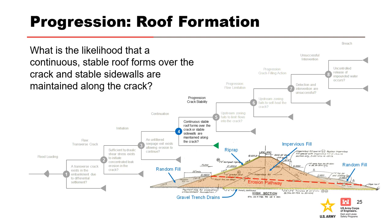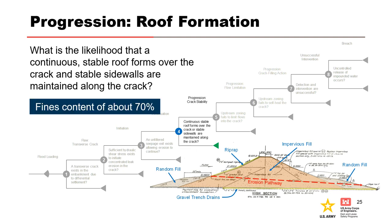Node 4: What is the likelihood that a continuous stable roof forms over the crack and stable sidewalls are maintained along the crack? The impervious fill used to construct the homogeneous embankment has an average fines content of about 70%, and the fines have some plasticity, making it virtually certain for the crack to hold a roof and stable sidewalls continuously from upstream to downstream. This is consistent with what was observed in 1949, where leakage and erosion continued until the reservoir elevation was lowered below the erosion tunnels.